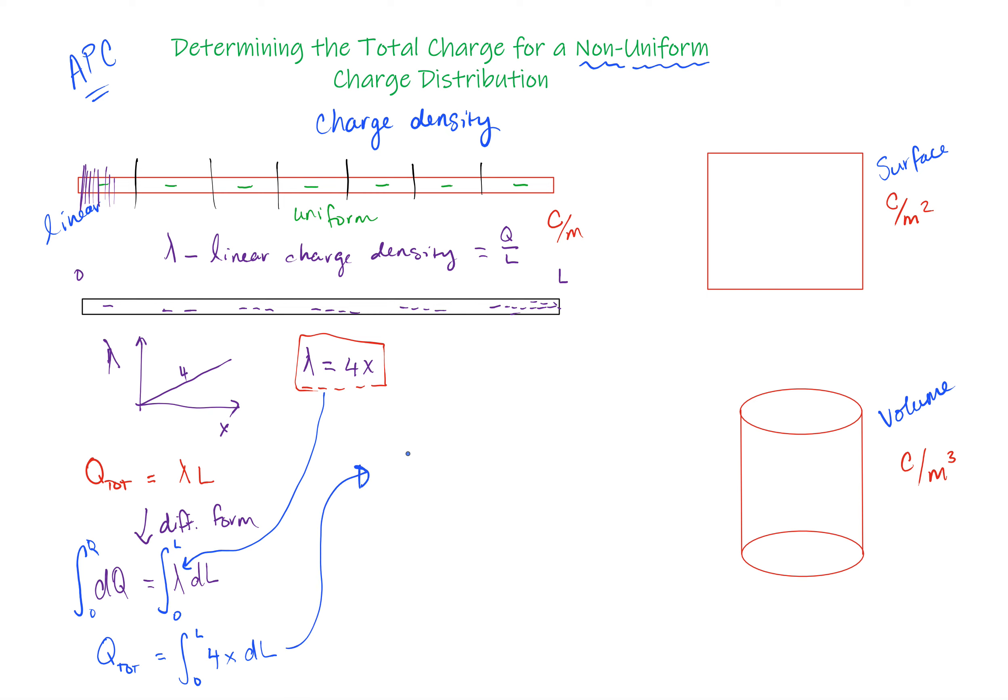So pull out the 4 first, just so that I can actually integrate this correctly, and then that means that this is going to become x squared over 2, and it's evaluated from 0 to L, and then I'll go ahead and simplify the fraction to 2x squared from 0 to L, and then I'm going to plug in the upper limit, and then subtract the lower limit. So I'll do 2L squared minus 2 times 0 squared, obviously that's all just 0, and so I'm left with the fact that the total charge is equal to 2L squared.